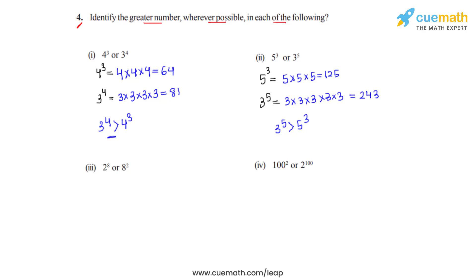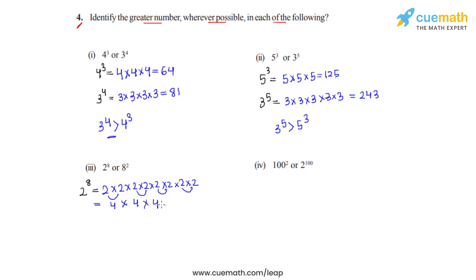Now coming to the third bit, we have 2 raised to 8 — that is, 2 is to be multiplied 8 times. So we get 2 times 2 which is 4, 2 times 2 which is 4 again, 2 times 2 is 4, and 2 times 2 again. Then we get 4 times 4 which is 16, and 4 times 4 which is 16 again. So 16 times 16 is 16 squared, which is nothing but 256. This is the expansion of 2 raised to 8.